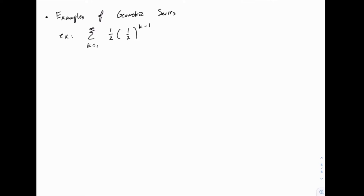And then to see whether it converges or not, all we have to look at is this value of r. And since that is less than 1 in absolute value, this one converges because the absolute value of 1 half is less than 1, and that 1 half is the value of r, so we know it converges immediately.